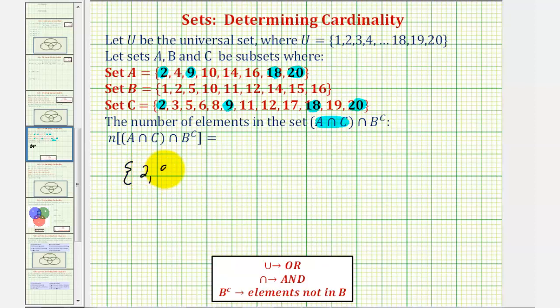So if this is A intersect C, we want to find the intersection of this set with B complement, where B complement would be all the elements that are not in B, but in the universal set. So we want to find the intersection of this set with B complement.